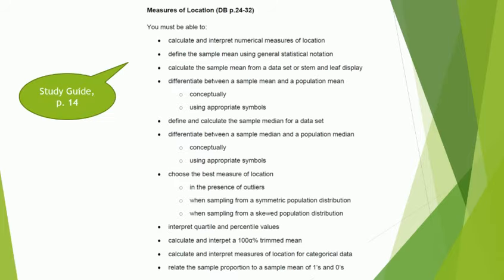First of all, in your study guides you will find the study objectives for today. We're going to look at numerical measures of location, how to calculate and interpret them. Then we'll also be looking at the sample mean and how we can write that in terms of general statistical notation. We're going to calculate the sample mean from a data set or a stem and leaf display.